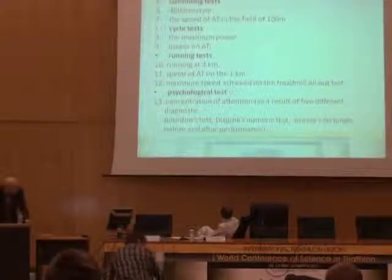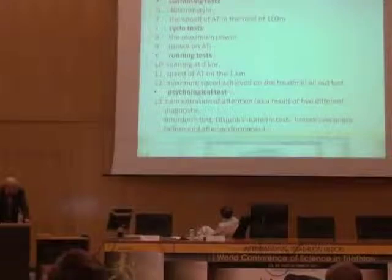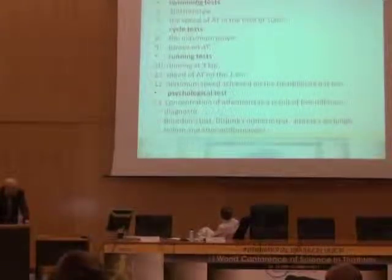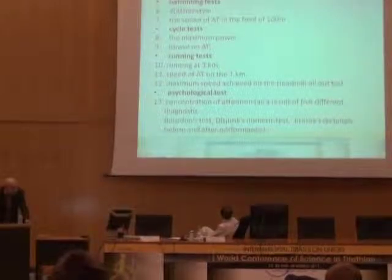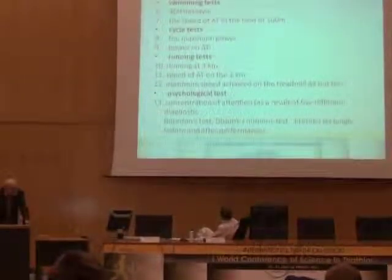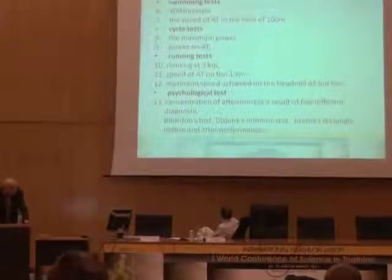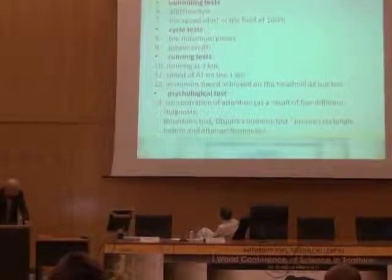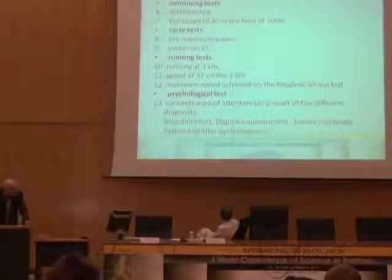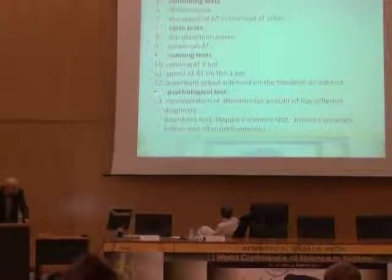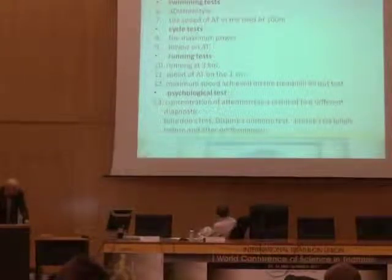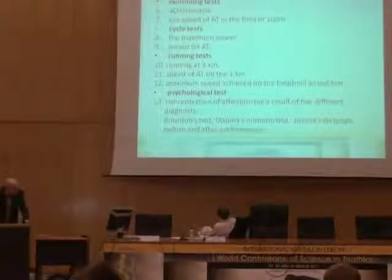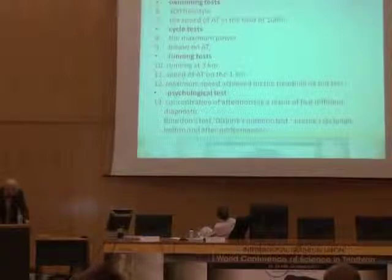From running tests, we declare running time over 6 km, and speed at the anaerobic threshold recalculated to speed per 1 km under ideal conditions — 20 degrees Celsius, no wind, no surface variation, no humidity. The last measure is maximum speed of running to exhaustion. From psychological testing, it is necessary to assess concentration and related physiological parameters at the border test.